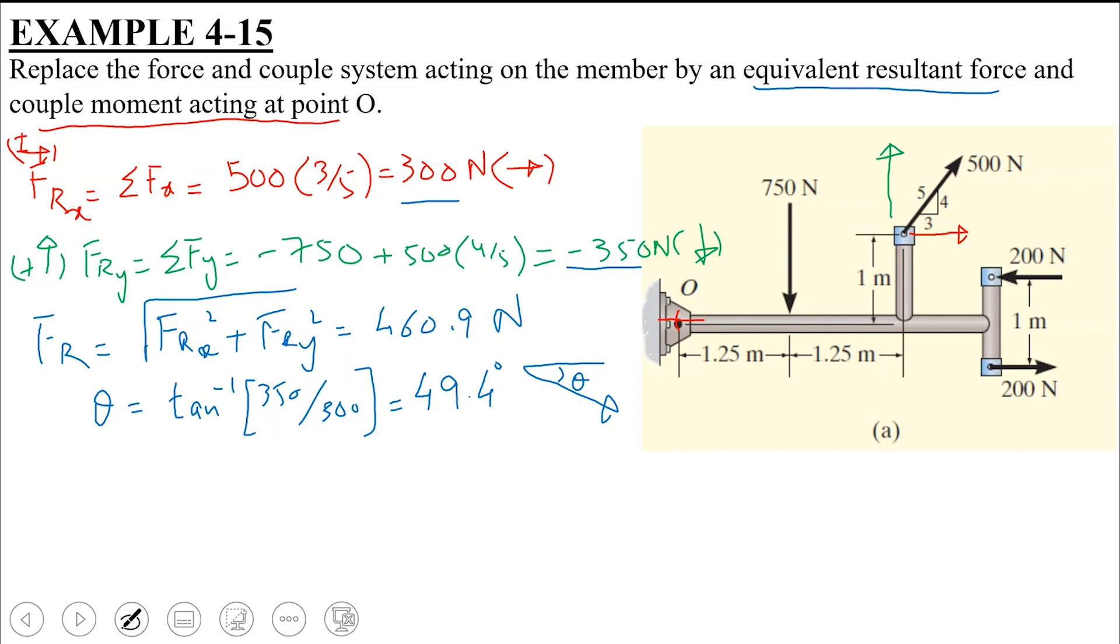It means that you can replace these two forces, which are 750 and 500 Newton forces, you can replace it by a single resultant force FR which you have determined, acting at an angle theta which you have defined. So the system will reduce to this force. But as we talked about it earlier, with the forces you get a couple of moments.